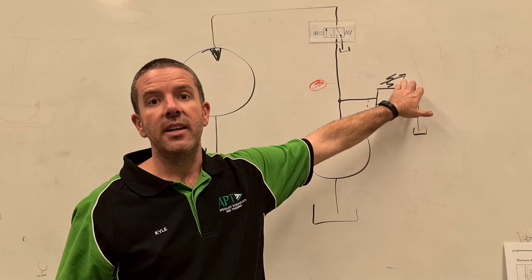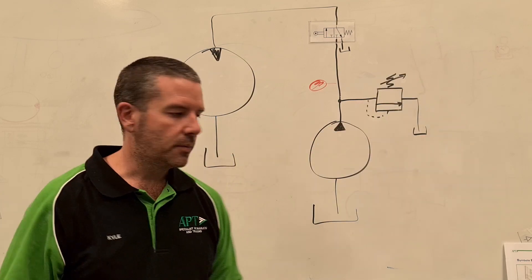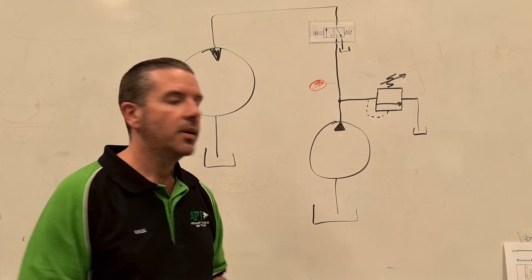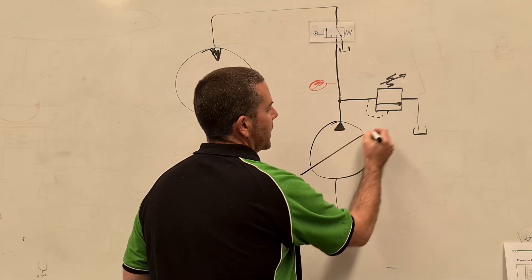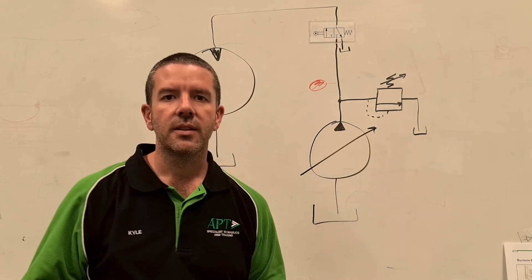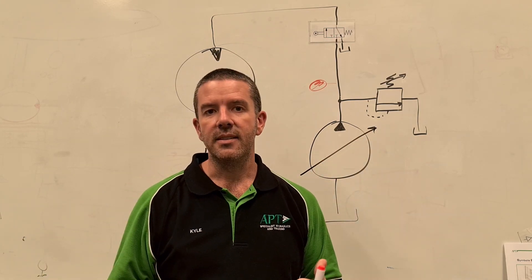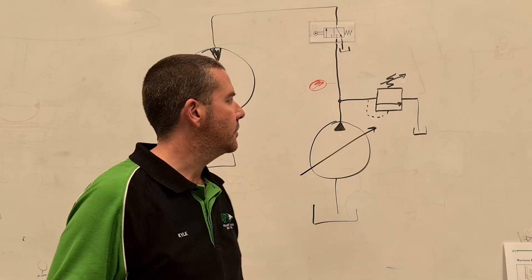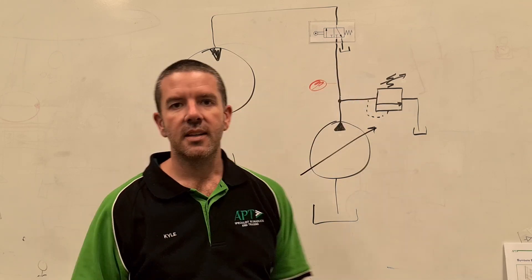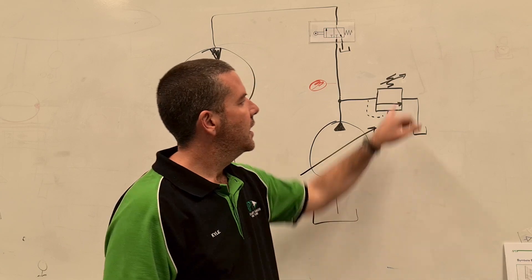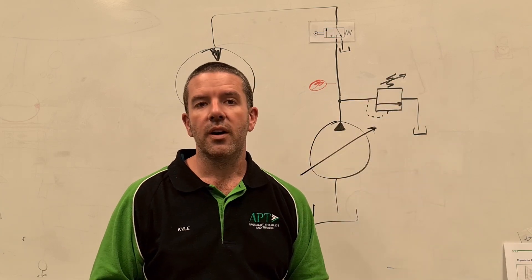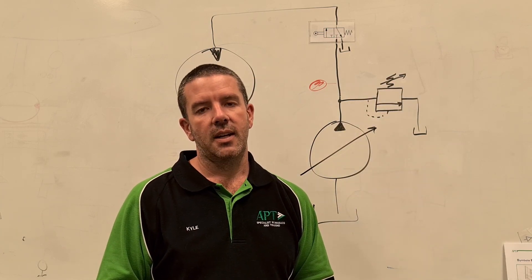A diagonal arrow through anything at all means that it is variable. So in the case of the pump, if we've got a variable pump, it might have an arrow through it like this, which means the output of it is variable or the displacement of it. So in this particular case here, there's a spring on top of this valve and that spring is adjustable via an adjuster, and that affects the setting of that valve.